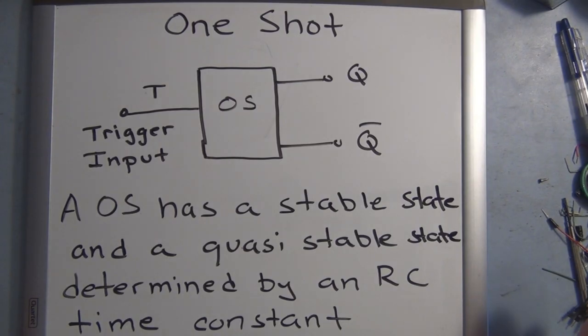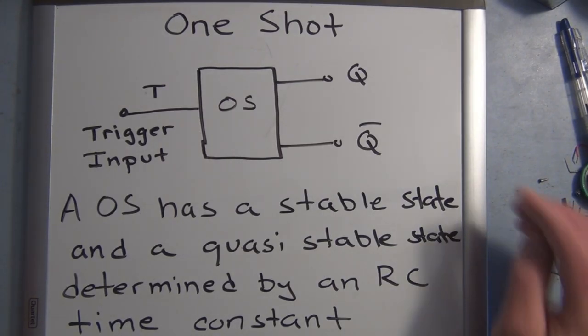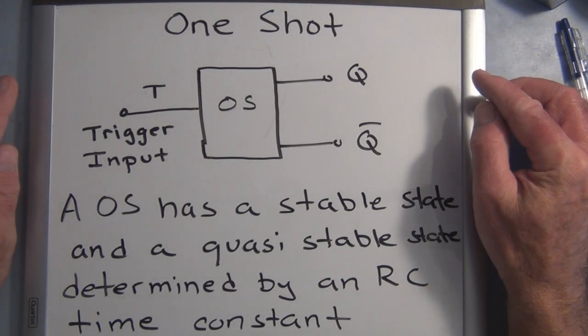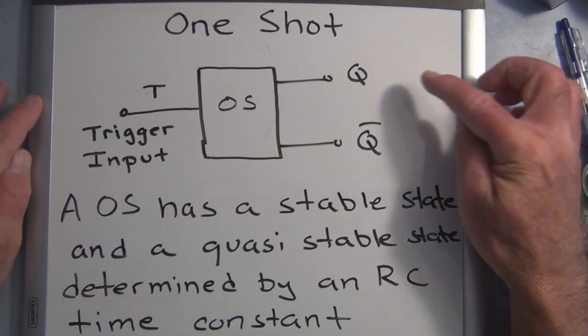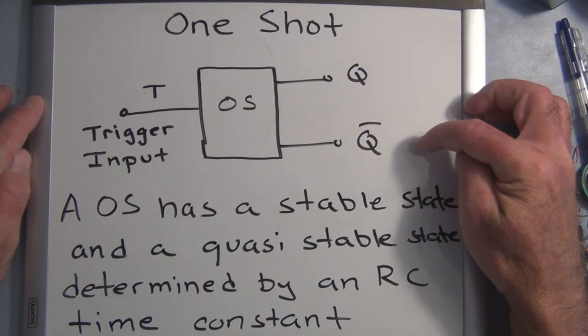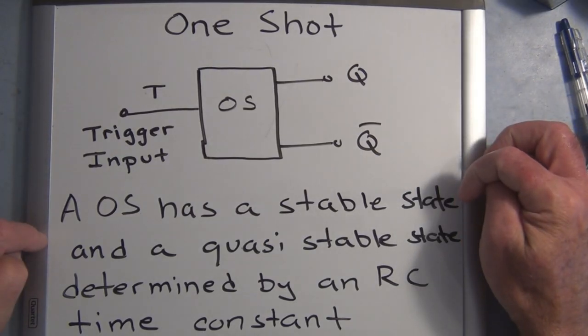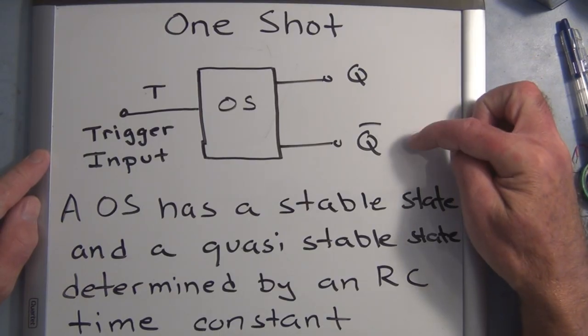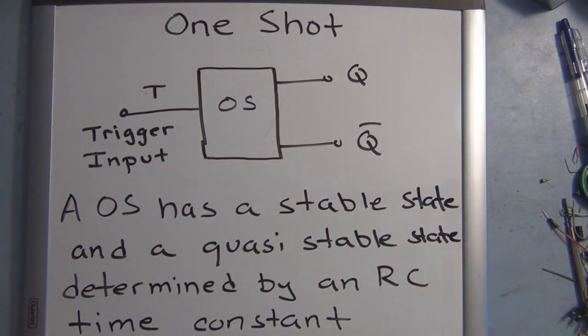This has a quasi stable state. What I mean is that it has a stable state, say by default Q is 0 and Q naught is equal to 1, but it has a quasi stable state where Q will equal 1 and Q naught will equal 0 for a period of time.